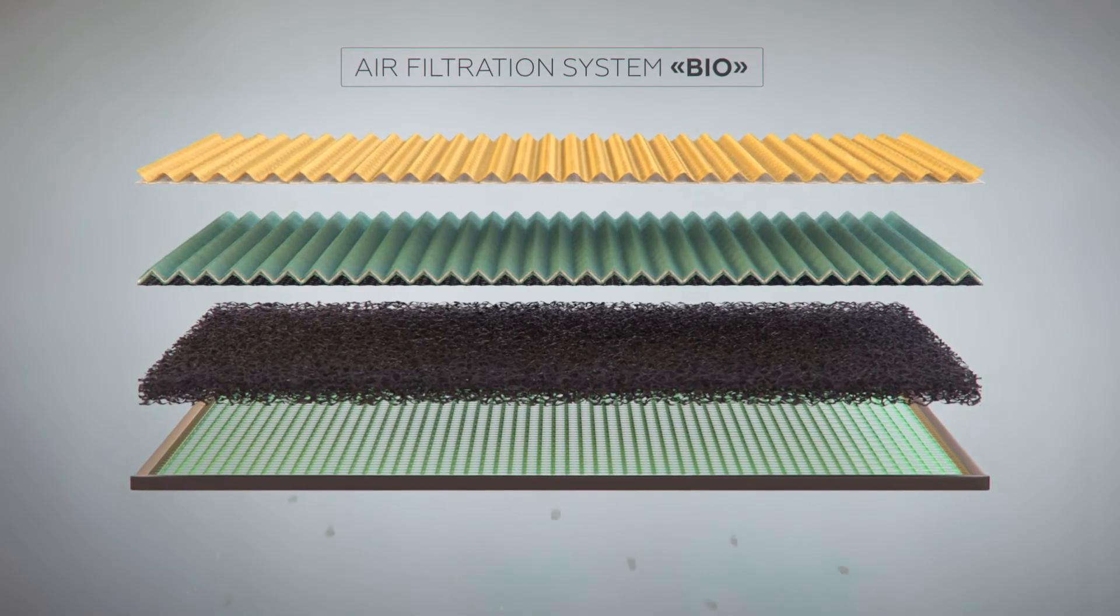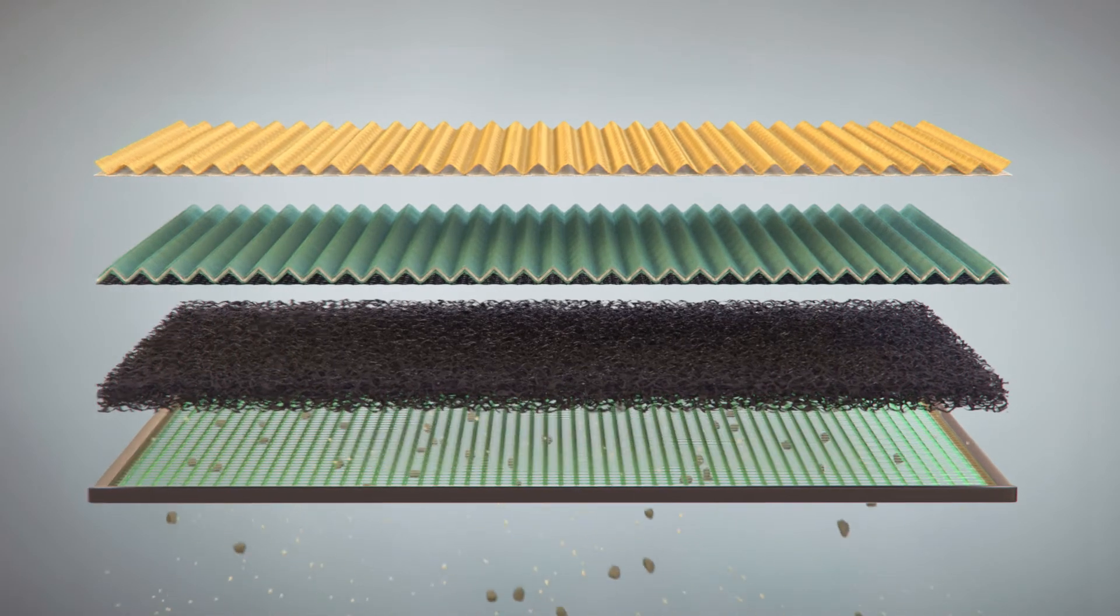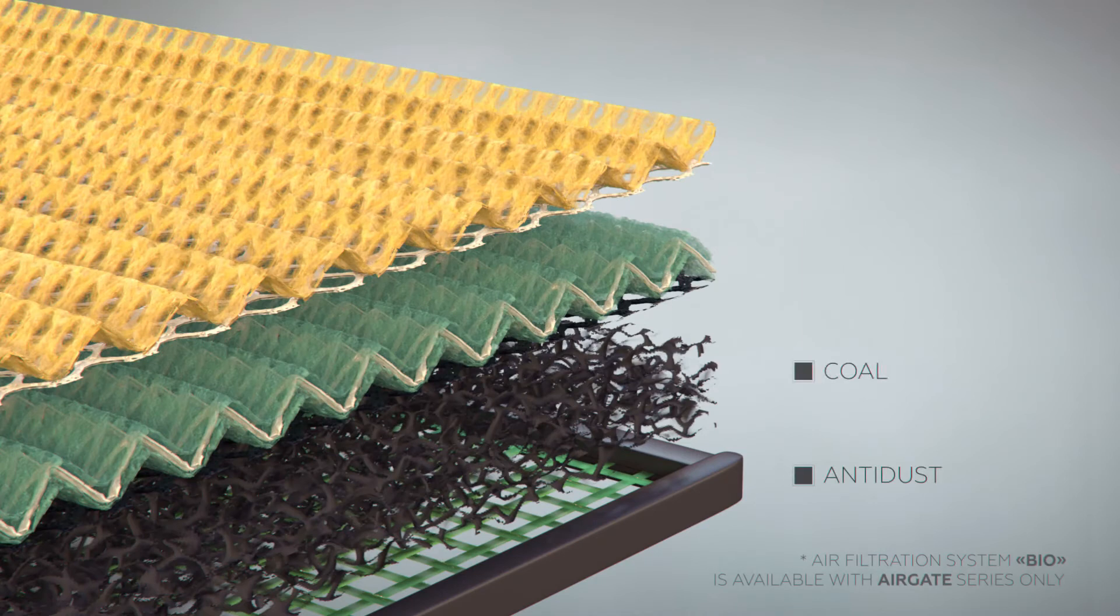The air that comes into the convection camera comes through an Air Gate biofiltration system. It is represented by four types of filters: anti-dust, coal, anti-bacterial, and an active vitamin C filter.